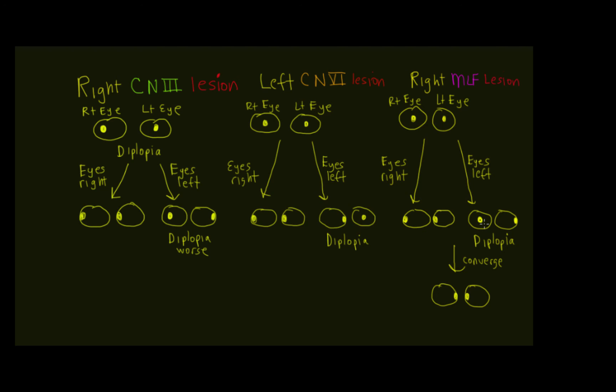Also, for six, since six goes right by the basis pontis, we also might expect, as a neighborhood sign, a contralateral hemiparesis as well. So it's important to also consider that, in addition to the double vision, there may be some other things that help us figure out where the lesion might be causing the double vision.